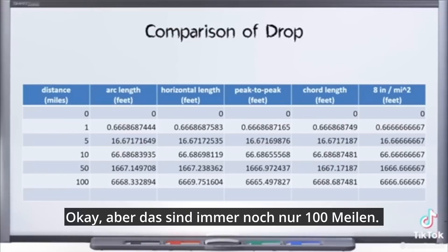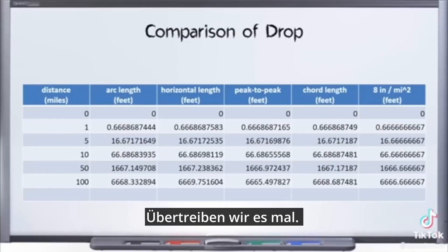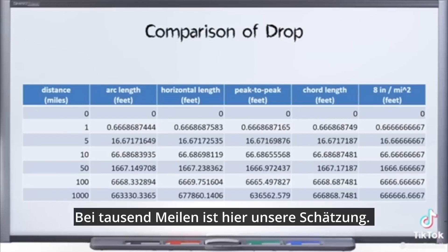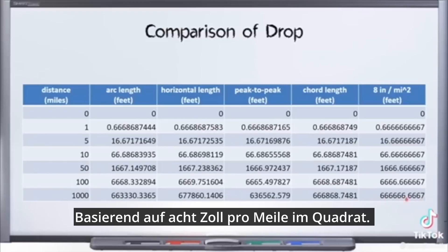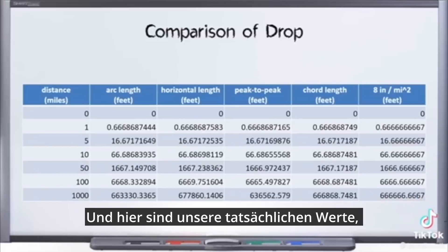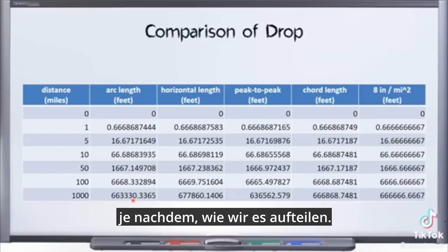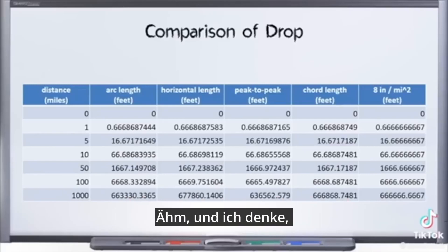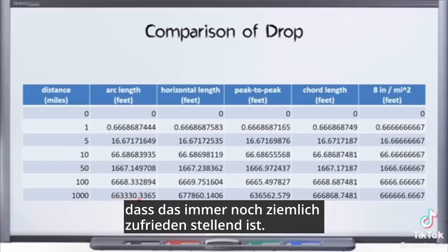But that's still only a hundred miles. Let's go nuts. At a thousand miles, here's our estimate based on eight inches per mile squared, and here are our actual values depending on how we sliced it. I think you'll find that's still pretty decent.